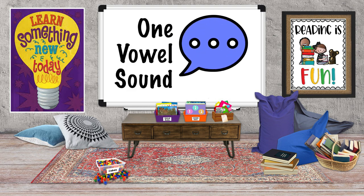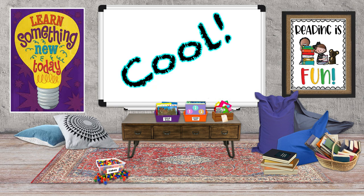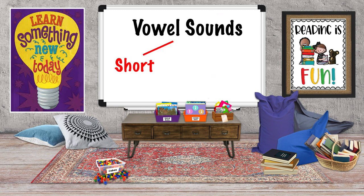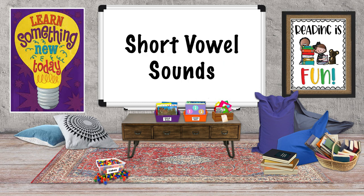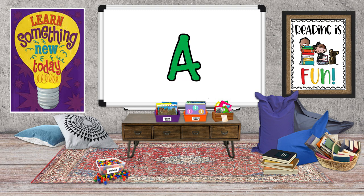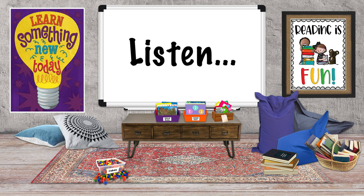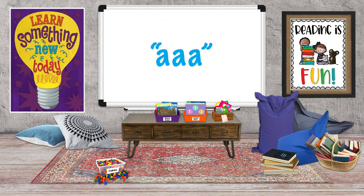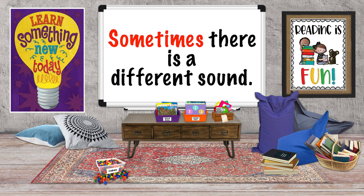Every word we say has at least one vowel sound. But here's something cool — vowels can make two different kinds of sounds: short and long. Let's check out short vowel sounds first. The letter A — short A can sound like this. Listen to the word 'cat.' The A in 'cat' has the short A sound.